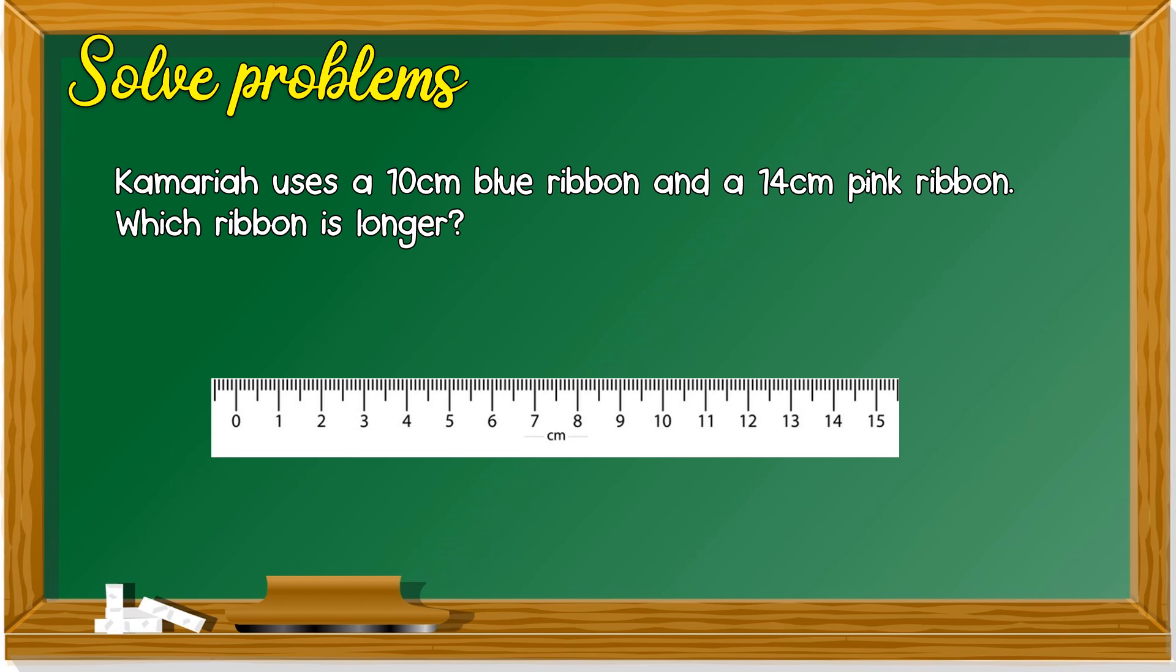What is this? This is a ruler. Yes. So Kamariah uses a 10 cm blue ribbon. We measure like this from 0. 0 is here. We must measure from 0. So this blue ribbon is 10 cm. And she uses another ribbon, pink, 14 cm pink ribbon.